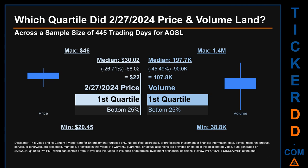Quartiles tell us about the spread of a data set by breaking it into quarters, just like how the median breaks the set into half. Descriptively, AOSL has a median price of $30.02. Therefore, February 27, 2024's price was lower from that middle marker by 26.71%. The day's volume of 107.8 thousand was less than the median by 45.49%.